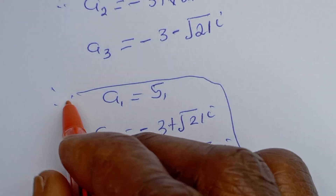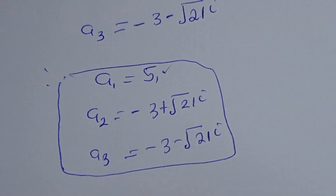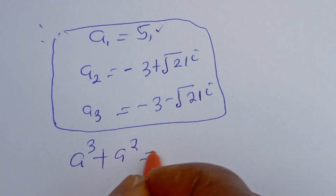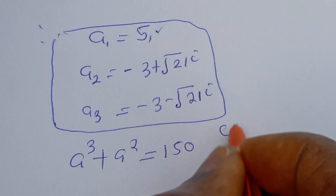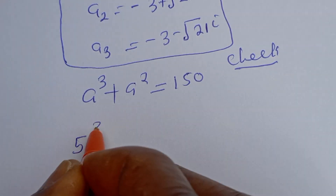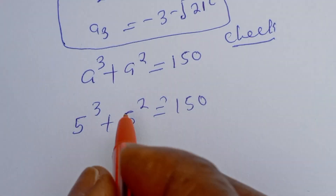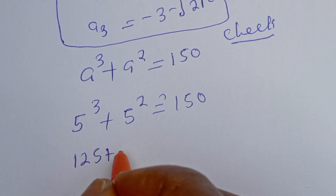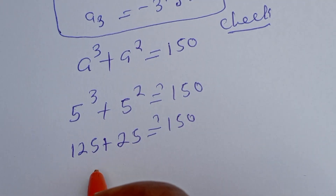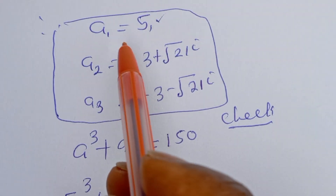We can check to confirm if this answer is right or wrong. We have two complex solutions and one real solution, so we can check using the real solution. From the given equation, a raised to power 3 plus a squared is equal to 150. When a is 5, we have 5 to the power of 3 plus 5 squared must equal 150. And 5 raised to power 3 is 125, plus 5 squared is 25, which must equal 150. And 125 plus 25 is 150, which satisfies the given equation at a equal to 5.